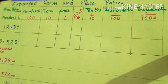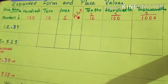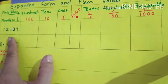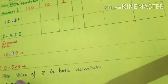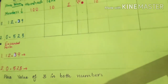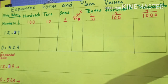Good morning students, I hope you all are doing well. Today the next topic is expanded form and place value in decimal numbers. I have two numbers, 12.39 and 0.523. I have to write these two numbers in expanded form and find the place value of three in both numbers.